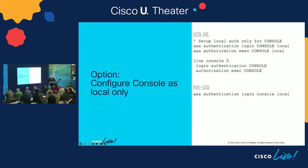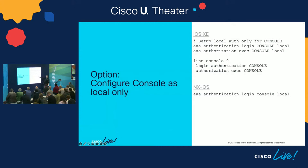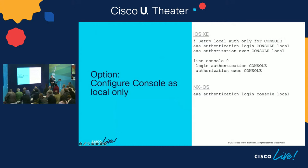Here's an optional but highly recommended step: configure your console access to use local authentication until you verify that your ISE access is functional. On IOS XE, set up special authentication and authorization policies called 'console' that just use local, so you can use that local admin account. On Nexus it's very simple: 'aaa authentication login console local.' This is an option if you're confident in your AAA setup, but when I'm first setting up a new system I always do this so I know I can get into the console if I lock myself out — because I will certainly lock myself out at some point.